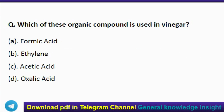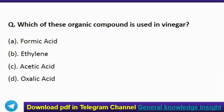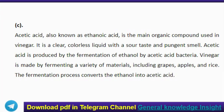The next question: which organic compound is used in vinegar? The correct answer is option C, acetic acid. Acetic acid, also known as ethanoic acid, is the main organic compound used in vinegar. It is a clear colorless liquid with a sour taste and pungent smell. Acetic acid is produced by the fermentation of ethanol by acetic acid bacteria. Vinegar is made by fermenting a variety of materials including grapes, apples, and rice.